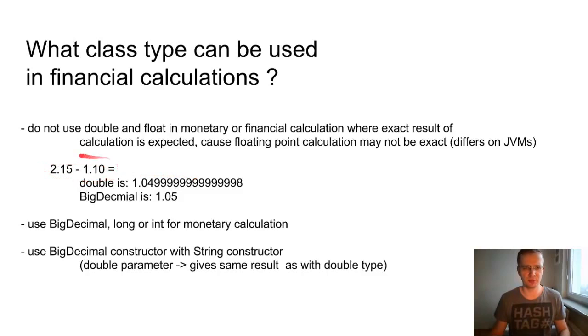For example, if we have such calculation, the double will produce this, while the BigDecimal, which is the recommended one, will produce this result. So BigDecimal, long, and int are recommended for monetary calculations. And you have to remember that if you construct a BigDecimal variable, use the string constructor because the double one gives the same result as the double.